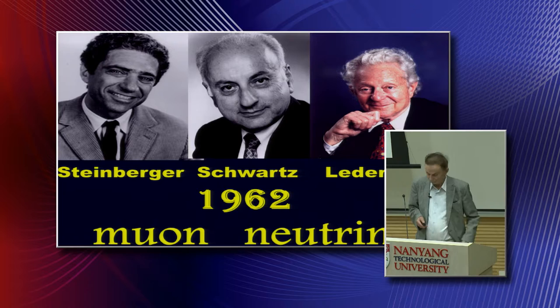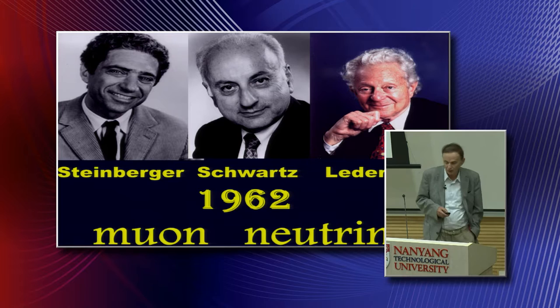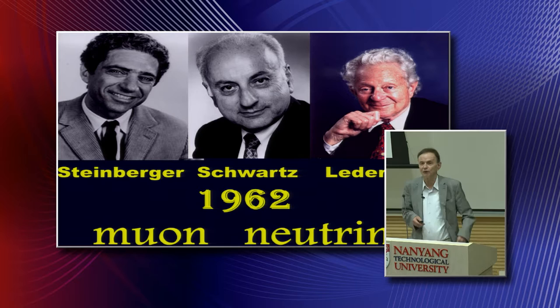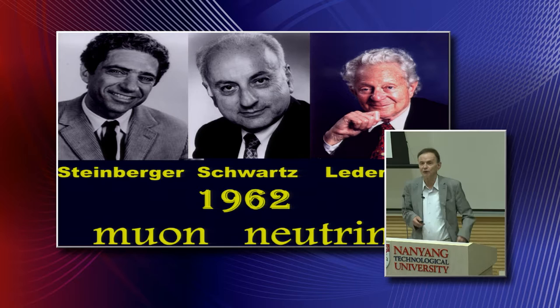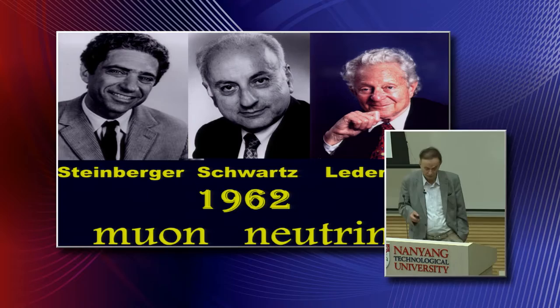Later on, a few years later, we found out that there is a second neutrino. Now we have three neutrinos. This discovery was made by Jack Steinberger, Mel Schwartz, and Leon Lederman in 1962 in Brookhaven. They took the neutrinos emitted in pion decay. And then they could show that these neutrinos are not equal to the electron neutrinos, which was assumed until then. So there was actually a second neutrino.